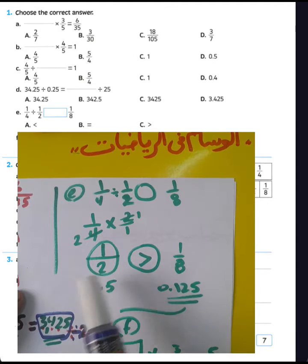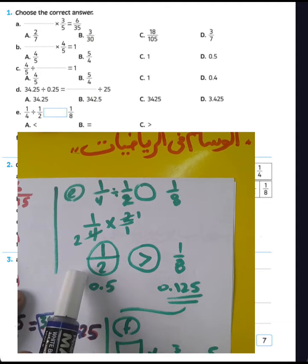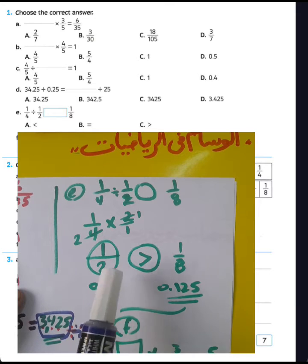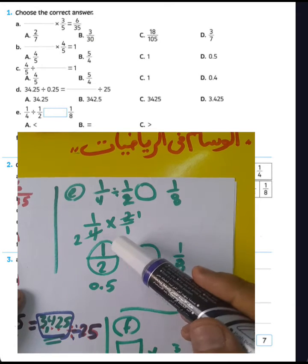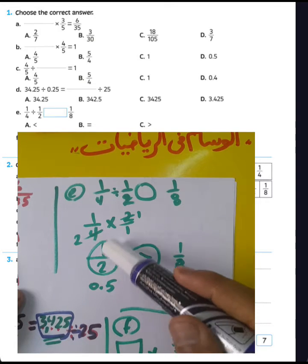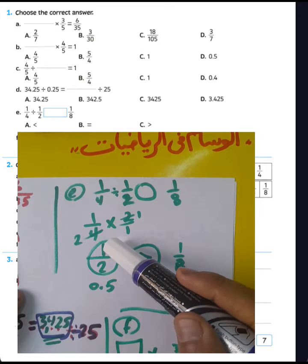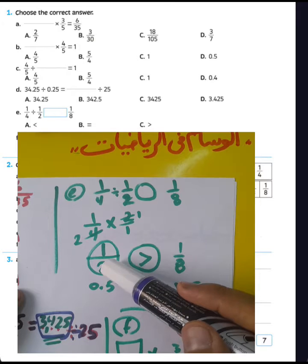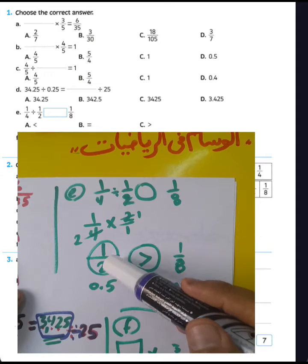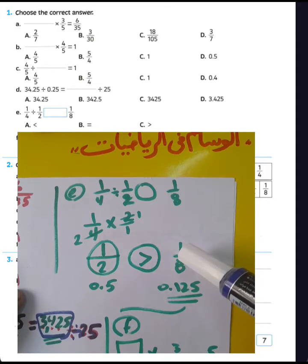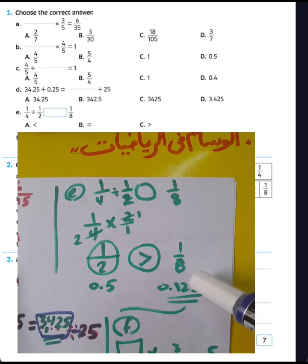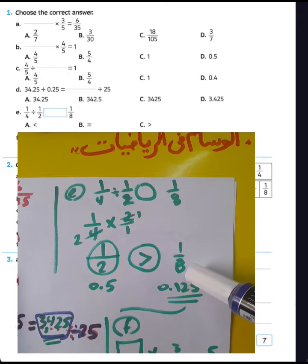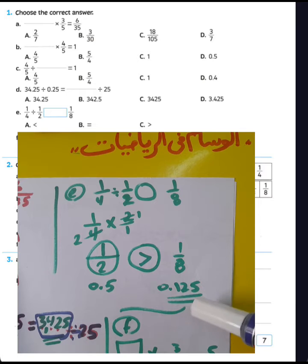We can convert from fraction to decimal number. One half equals 0.5 — multiply numerator and denominator by 5: 1 times 5 equals 5, 2 times 5 equals 10, so 5 divided by 10 equals 0.5. And 1 over 8, converted by multiplying by 125 numerator and denominator, gives the result 125 over 1000.